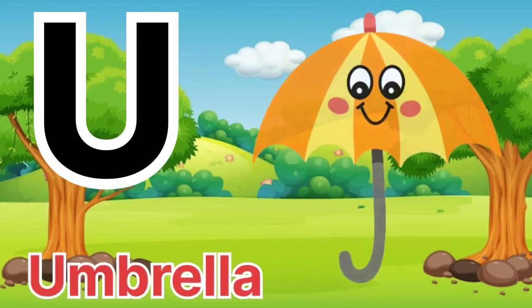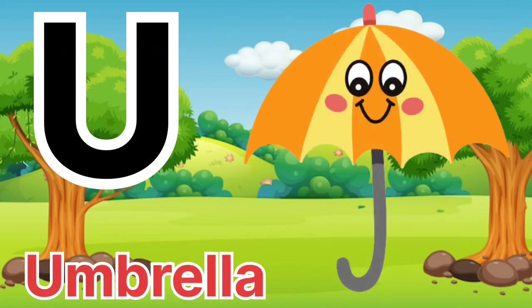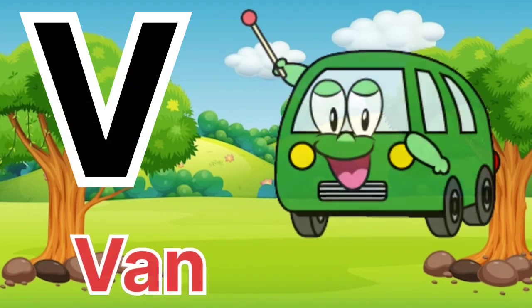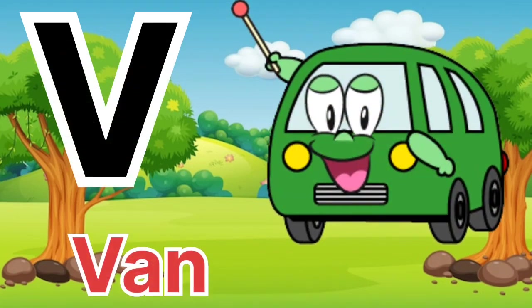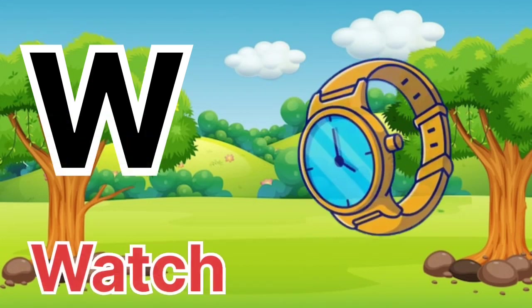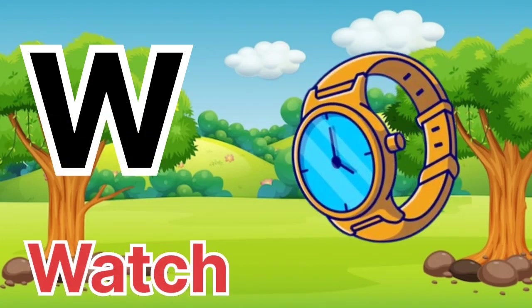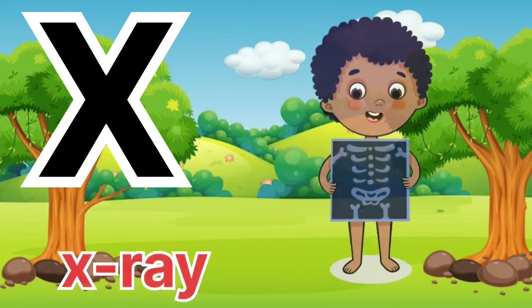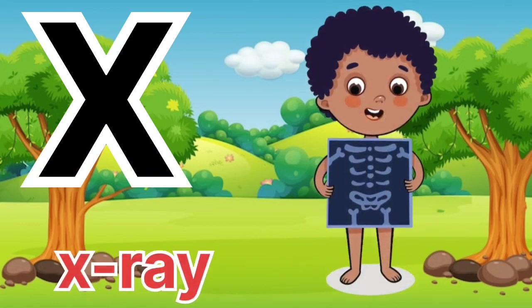U for umbrella, V for van, W for watch, X for x-ray.